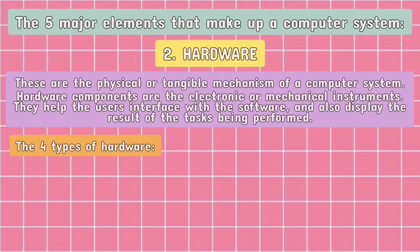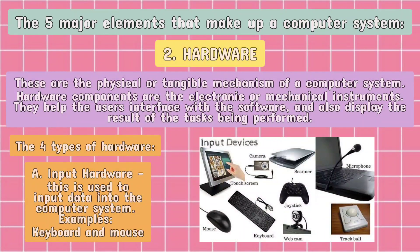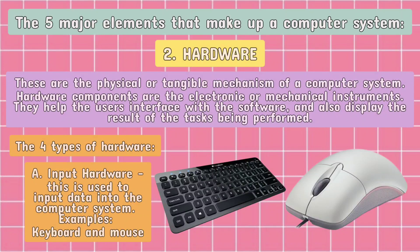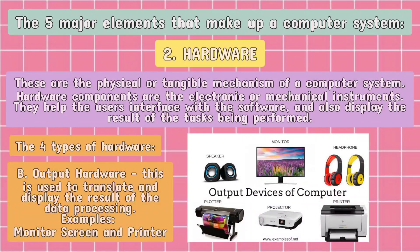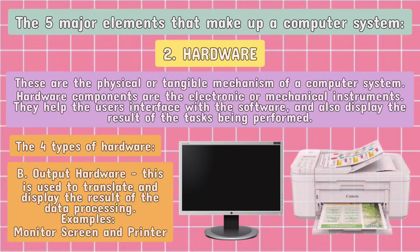There are four types of hardware. The first one is the input hardware, used to input data into the computer system. Examples: keyboard and mouse. The second one is the output hardware, used to translate and display the result of the data processing. Examples: monitor screen and printer.